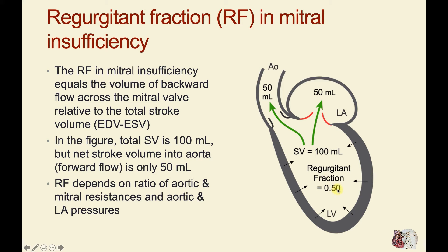The value for this regurgitant fraction depends on the ratio of aortic and mitral resistances, and aortic and left atrial pressures. If the mitral resistance is very low relative to the aortic valve when it opens, you'll get more regurgitant flow. Altering pressures in either the aorta or the left atrium can also affect the regurgitant fraction.